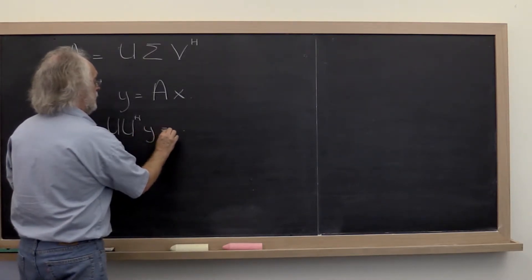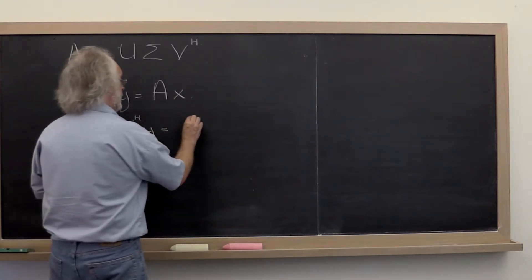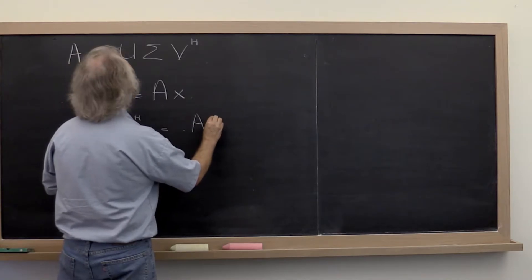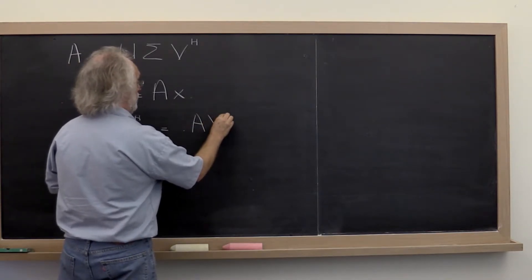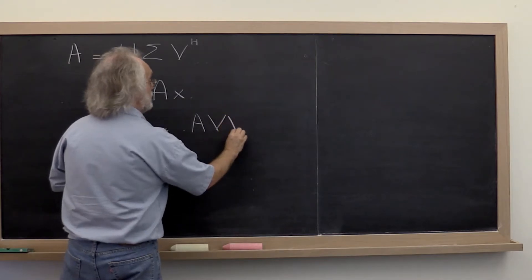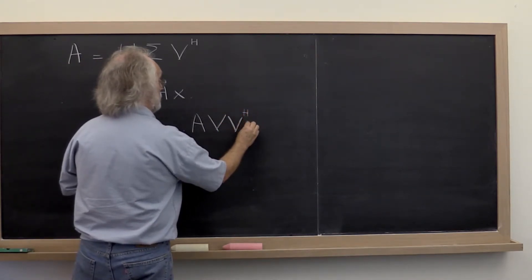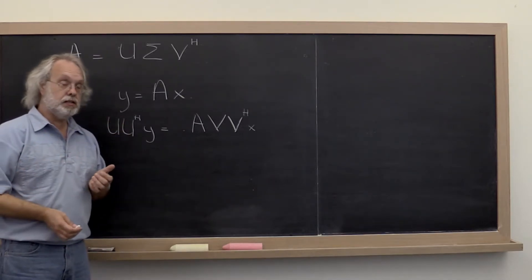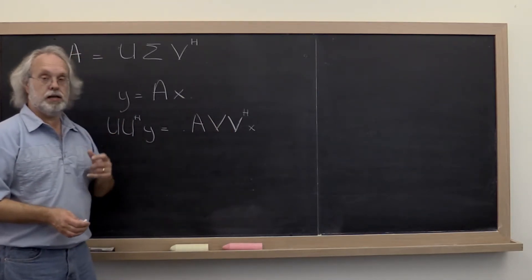And let's similarly insert an identity into the middle right here by inserting v times v Hermitian transpose. That's an identity. That's an identity.